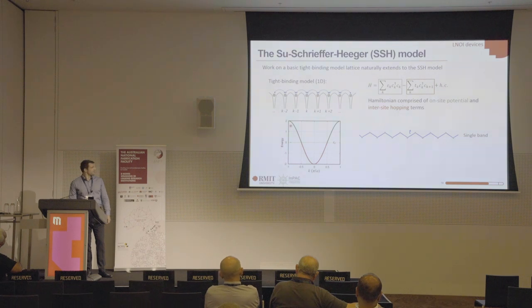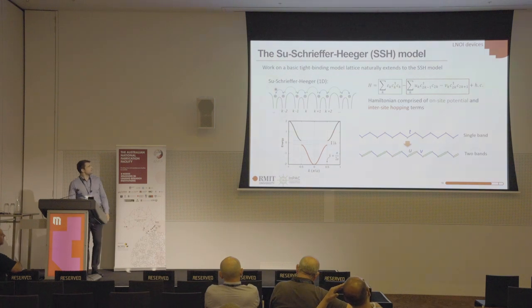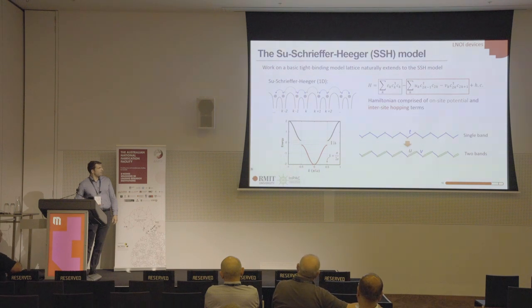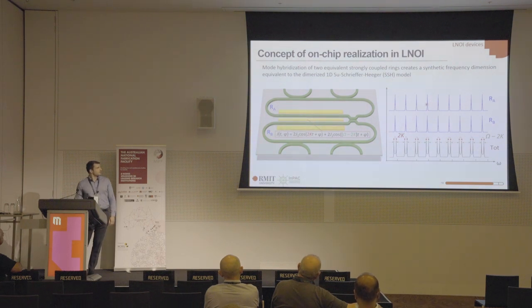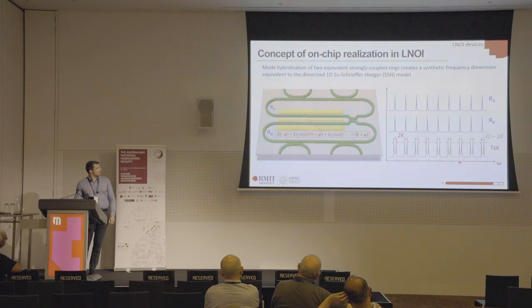The tight-binding model alone is not particularly interesting topologically — there is nothing topological about a single-band model. To get topological behavior, one needs to break some symmetries. The most fundamental way is to create an alternating strong-weak coupling between lattice pairs; that is the SSH model in 1D. This forces a change in the basis of the lattice, opens a band gap, and you can have two bands with chiral properties. In photonics, this is done using two rings instead of one — a photonic molecule — where hybridization through coupling produces bonding and antibonding states that split the resonance, giving two different coupling ranges in frequency.